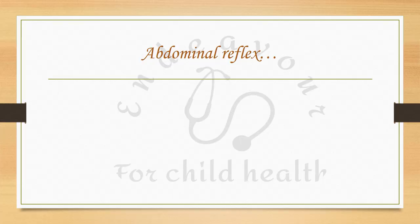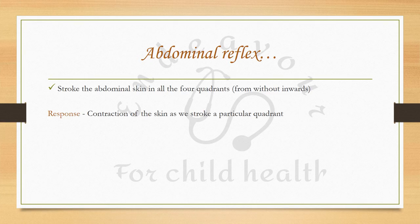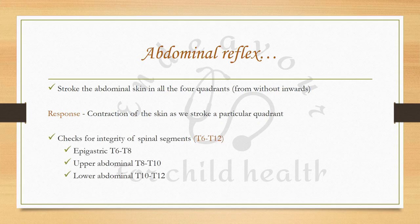To elicit the abdominal reflex, stroke the abdominal skin in all four quadrants from without inwards. The response will be a contraction of the skin as you stroke a particular quadrant. This checks for integrity of the spinal segments T6 to T12: the epigastric checks T6 to T8, upper abdominal T8 to T10, and lower abdominal T10 to T12.